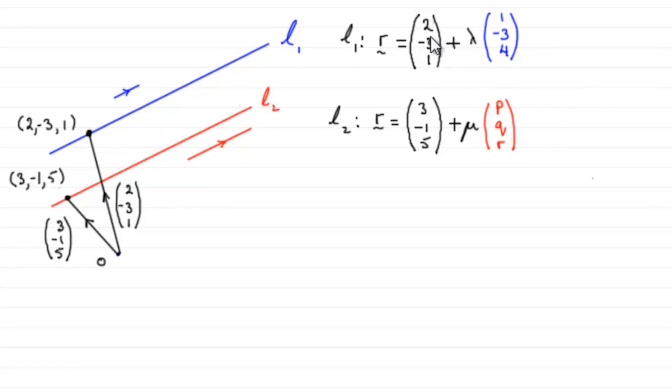Now we should know that 2, -3, 1 for the line L1 represents a known fixed point on the line, and the same applies to 3, -1, 5, a known fixed point on the line L2.